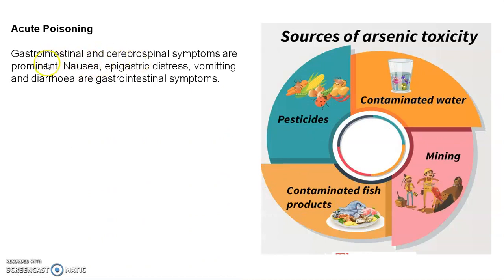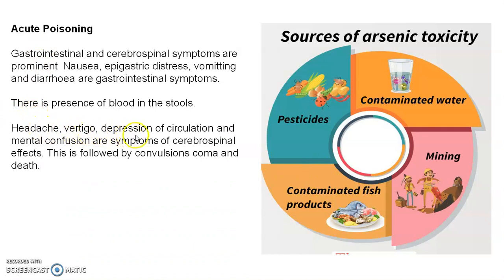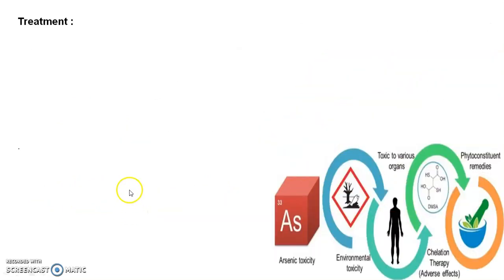In acute arsenic poisoning, gastrointestinal and cerebrospinal symptoms are prominent: nausea, epigastric distress, vomiting, diarrhea, and presence of blood in the stool. Cerebrospinal effects include headache, depression of circulation, and mental confusion. This is followed by convulsions, coma, and sometimes death. The fatal dose of arsenious oxide for acute poisoning is 120 to 200 milligrams.